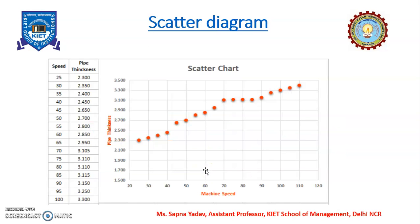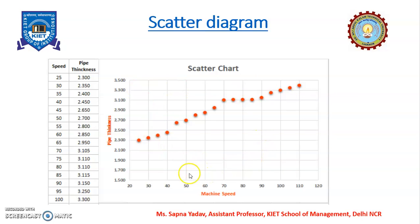Now move on to the next tool — the scatter diagram. It is helpful in identifying if there is a correlation between the values of two variables. If there is a relationship between two variables, the points form a linear pattern. If there is no relationship, the values are scattered across the entire area. This diagram shows whether a relationship exists between the two variables.